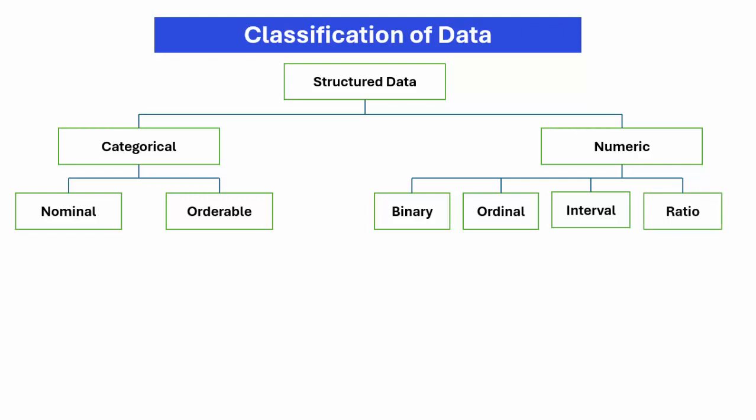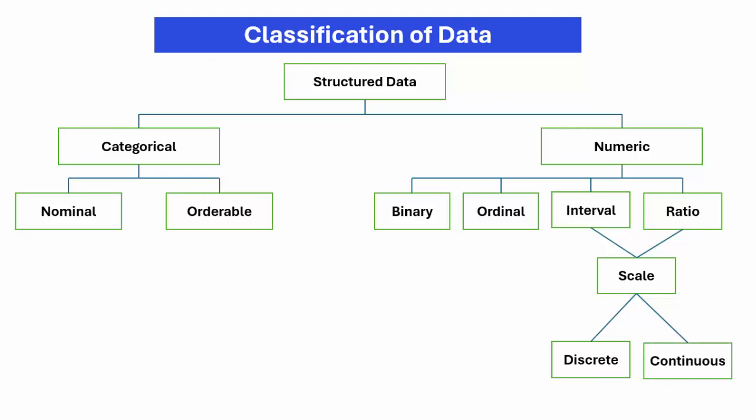So nominal and orderable I explained. Ordinal data is when we use the numeric value of orderable data. Binary data is in the form of 0 and 1 only. Interval and ratio are data types like age, income, and distance — there is a difference between interval and ratio data which we will see later. Interval and ratio are scales; ordinal and binary are data, not scales. Finally, interval and ratio scales are further classified into discrete and continuous.